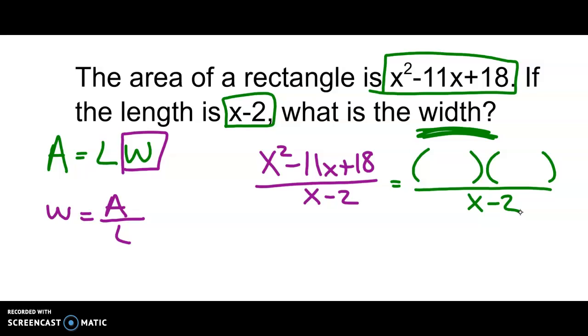So let's practice our factoring techniques. We don't need to use the AC method because the a value is 1. We do know that x times x gives us the x squared that's right here, and we need two numbers that multiply to give me 18 but add up to give me negative 11.